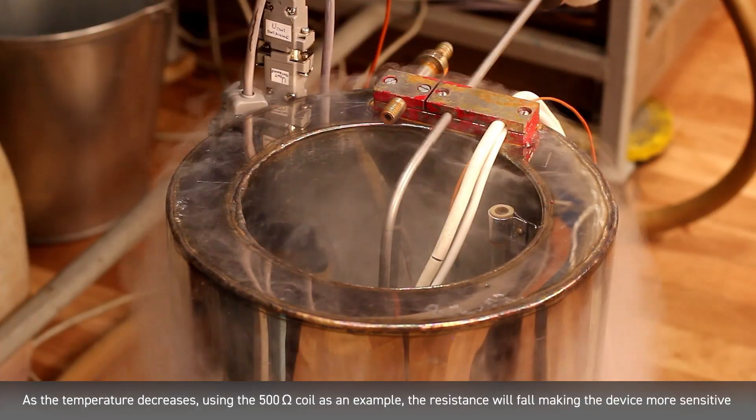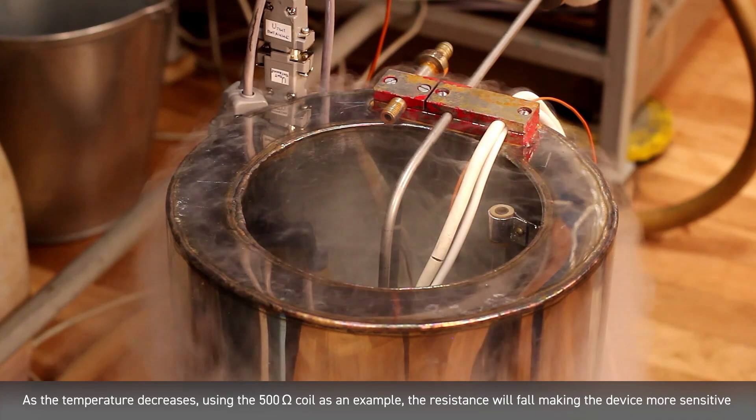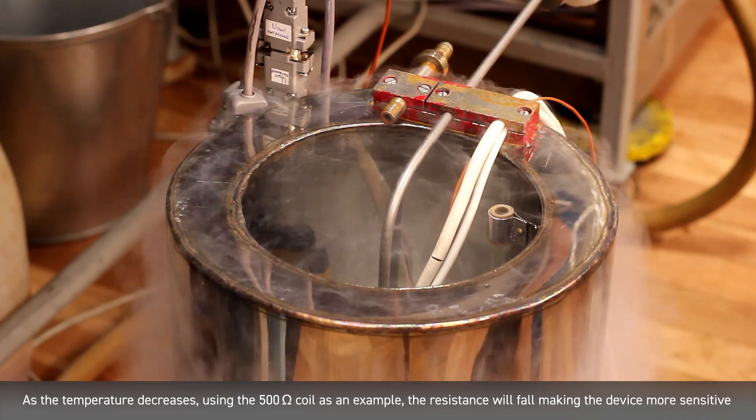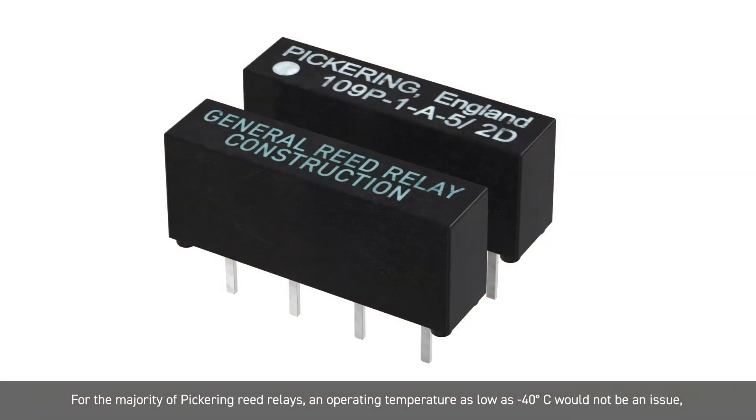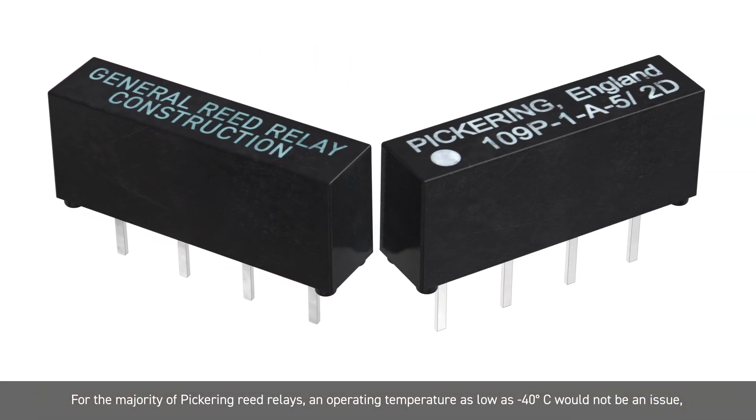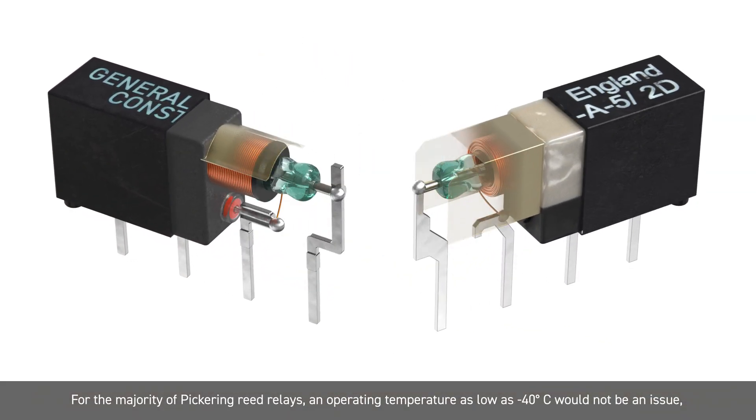As the temperature decreases, using the 500 ohm coil as an example, the resistance will fall, making the device more sensitive. For the majority of Pickering reed relays, an operating temperature as low as minus 40 degrees Celsius would not be an issue.